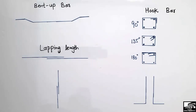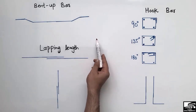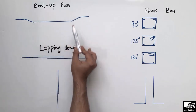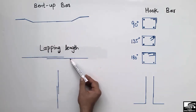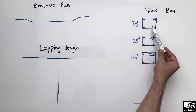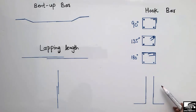Hello guys, welcome back to the 7 Engineering YouTube channel. Today our lecture is about the basics of reinforcement details. In this lecture I will mainly cover the requirements for the bent-up bar, the overlapping length for compressive and tension members, the standard hook length for different types of hooks, and also the length of legs in columns and footings.